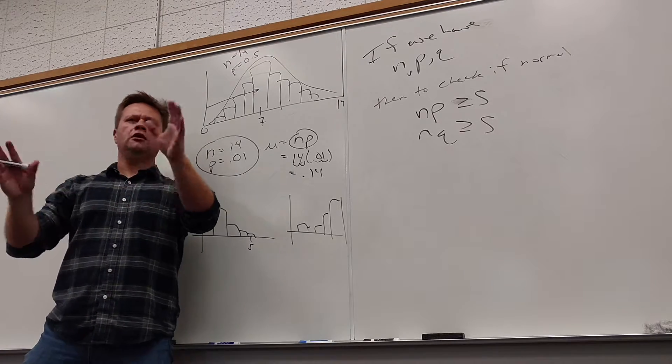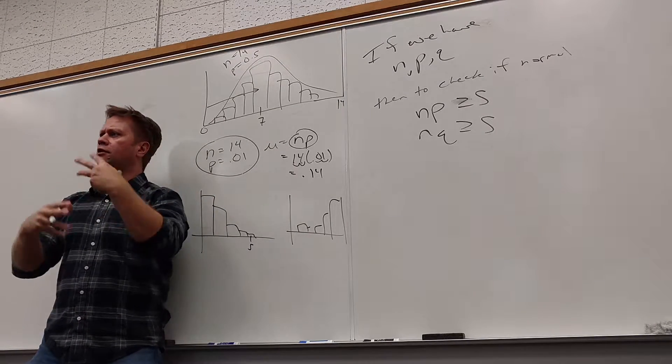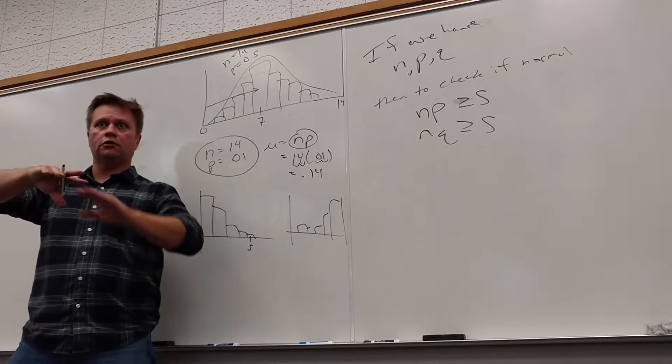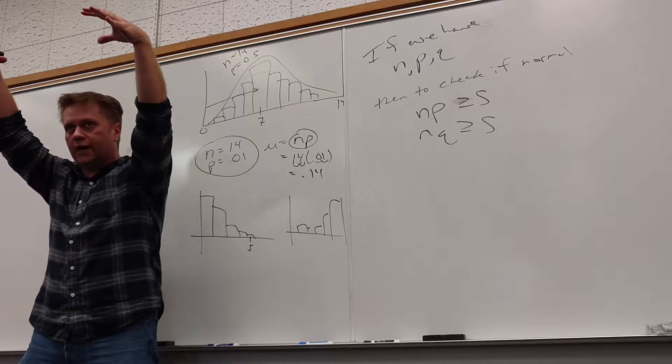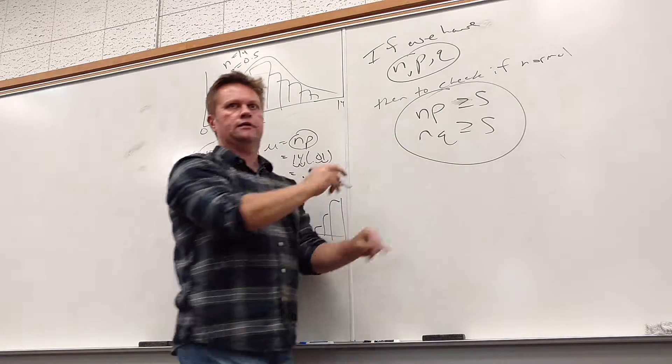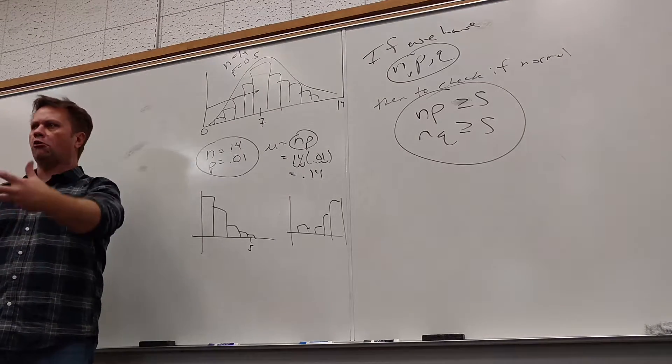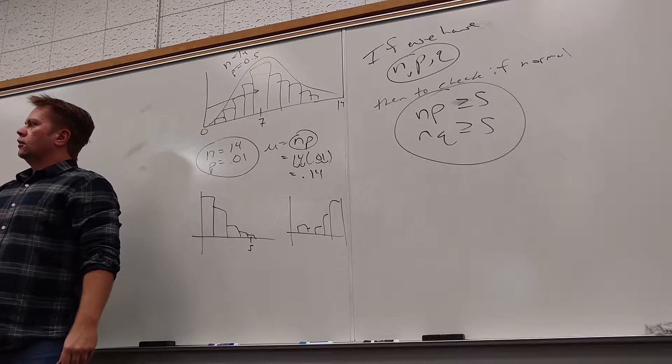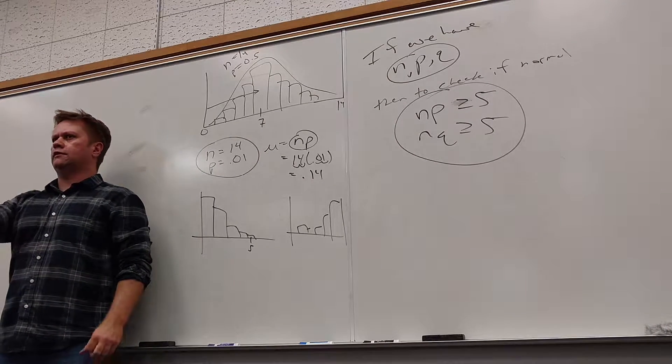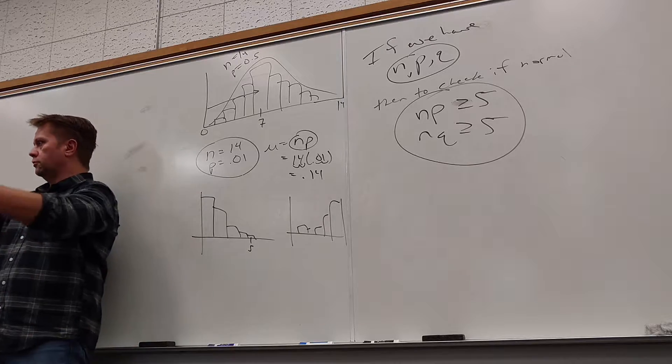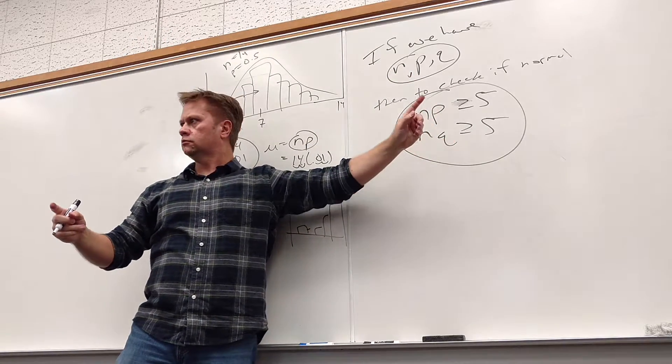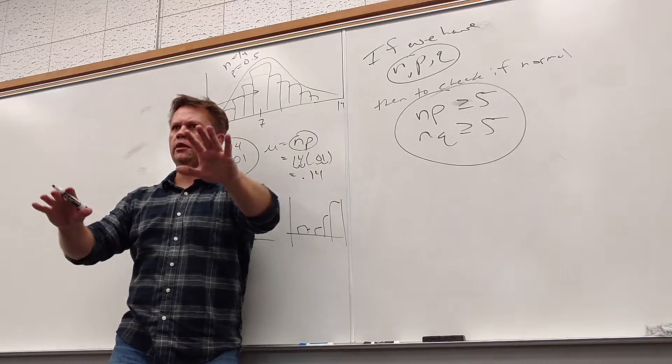So here's the check. If I have an NPQ problem, or more technically a binomial distribution, then to check if it's normal, these have to be true. NP must be greater than or equal to 5. NQ must be greater than or equal to 5. This one pulls it away from that wall. If it's 5 or more, then it has room to go up and come down. NQ pulls it away from the other wall. So if I pull it away from that wall and make sure it's away from that wall, then it's got room to grow and then to come back down.